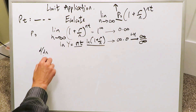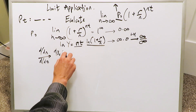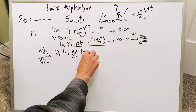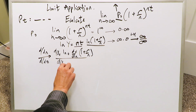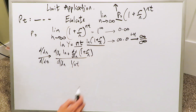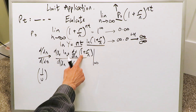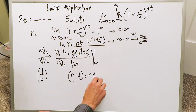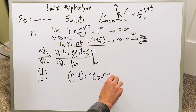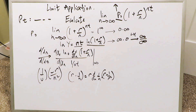We'll do the derivative with respect to n of the numerator and denominator. For the numerator, we have a composite: d/du of ln(u) times du/dn, where u is one plus r over n. When you do the derivative of ln(u) you get 1/u. For the derivative of one plus r/n, the 1 drops out, and r/n is r times 1/n, so its derivative is r times −1/n², giving −r/n².